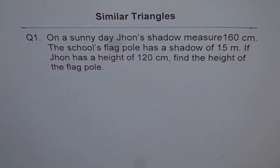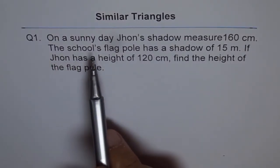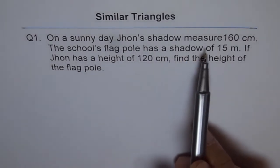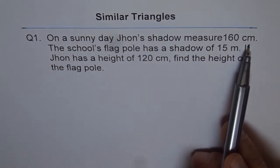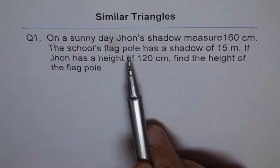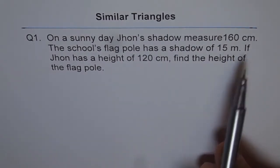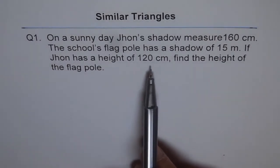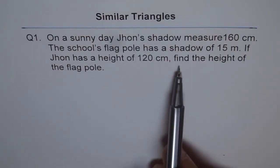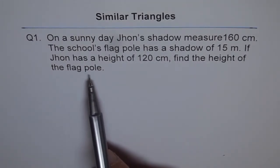Similar Triangles, question 1. On a sunny day, John's shadow measures 160 cm. The school's flagpole has a shadow of 15 m. If John has height of 120 cm, find the height of the flagpole.